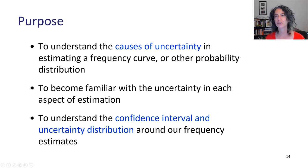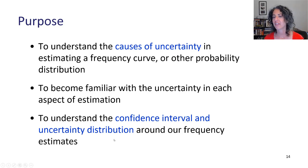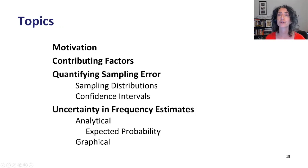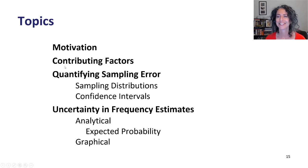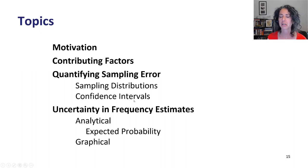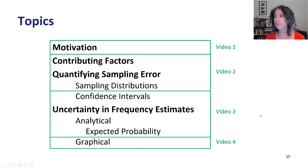The purpose of this lecture is to understand the causes of uncertainty in estimating a frequency curve or any probability distribution, to become familiar with uncertainty in each aspect of the estimation, and to understand the confidence interval and uncertainty distribution around our frequency curves. Our topics are: motivation (which we just covered), contributing factors, quantifying sampling error with sampling distributions and confidence intervals, and then specifically uncertainty in frequency estimates for both analytical and graphical distributions — including expected probability.